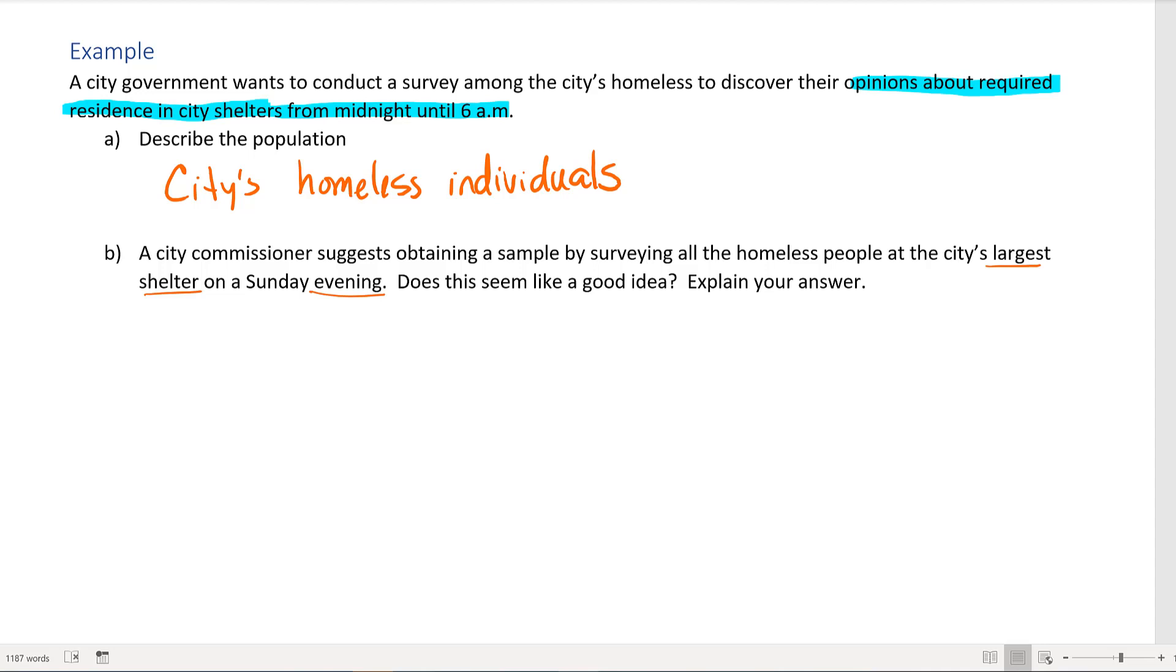Is this a good random representative sample? Well no, it's not. This is not representative because you're only surveying people who are already at the shelters, and they might actually be more likely to agree with having mandatory residences in city shelters.